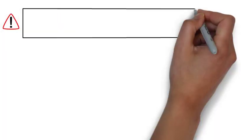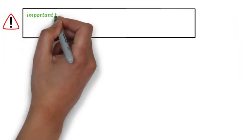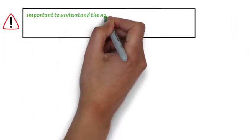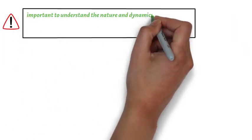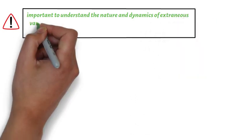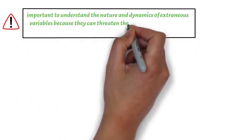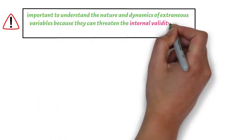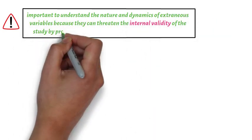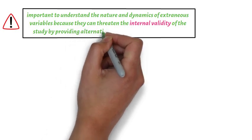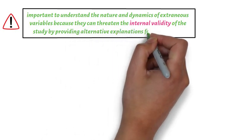It is important to understand the nature and dynamics of extraneous variables because they can threaten the internal validity of the study by providing alternative explanations for your results.